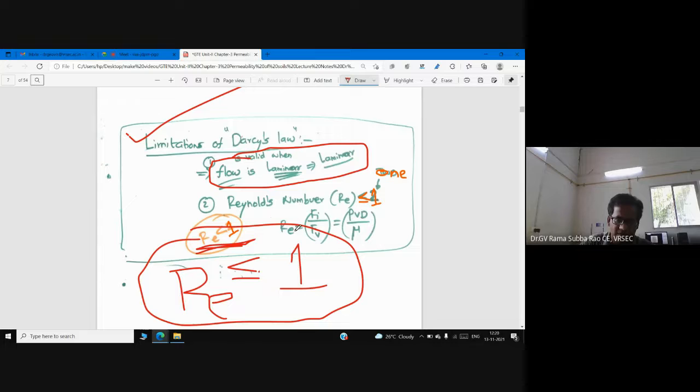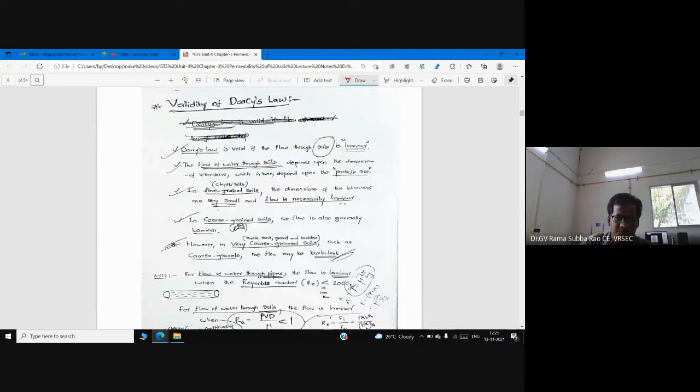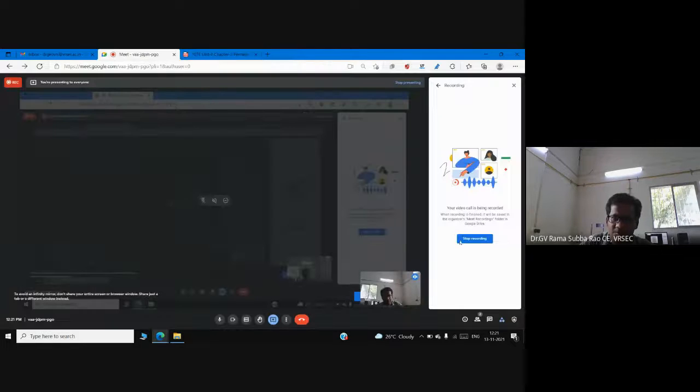Inertia force by viscous forces - the very popular formula R is equal to rho Vd by mu. So as long as the flow is laminar and steady and Reynolds number is less than or equal to one, Darcy's law is applicable. This may not happen in very coarse-grained soils where you may expect some turbulence. In fine-grained soil it will be steady and laminar flow. Thank you all.